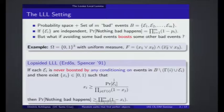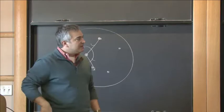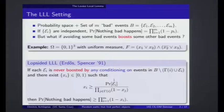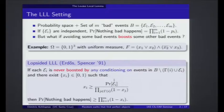A stronger version replaces the independence condition with the non-boosting condition. This is exactly the same formulation as before, except that now we require that each event is not necessarily independent from the vast majority of other events, but the vast majority of other events have the property that they never boost this event. So you can be correlated as long as you're correlated in the right direction — there should be only few events that boost the probability of a bad event happening.